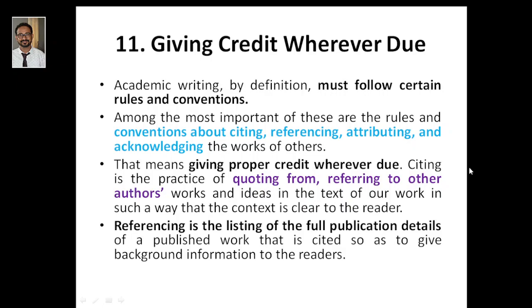Among the most important of these are the rules and conventions about citing — that means you need to cite a particular paper because you have got some points from that particular work while doing the review of literature. For example, in the first statement of your first paragraph, you may have cited two articles — one and two.